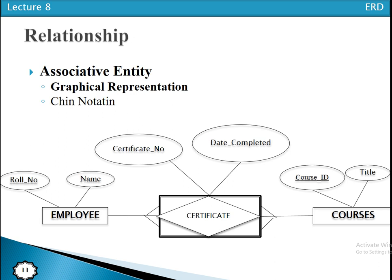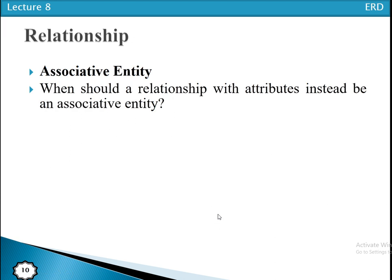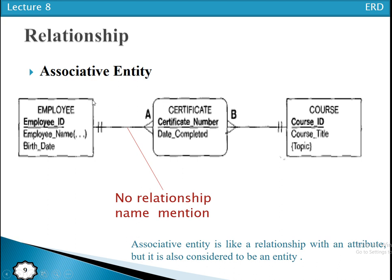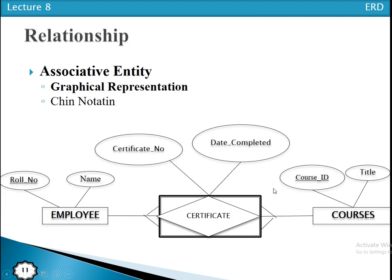In Chen notation, a normal entity type is represented by a rectangle, while an associative entity type in crow's foot notation is represented by a rounded-edge rectangle. In Chen notation, the associative entity type uses a diamond symbol enclosed within a rectangle. For example, 'certificate' is the associative entity type placed in a diamond symbol enclosed by a rectangle, with attributes certificate number and date complete.